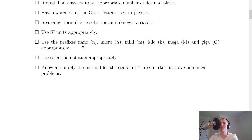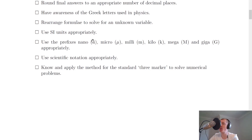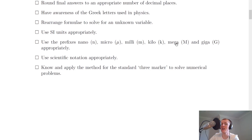You need to be able to use the prefixes nano, micro, milli, kilo, mega, and giga appropriately. Nano is times 10 to the minus 9, micro is times 10 to the minus 6, milli is times 10 to the minus 3, kilo is times 10 to the power of positive 3, mega is times 10 to the power of 6, and giga is times 10 to the power of 9.